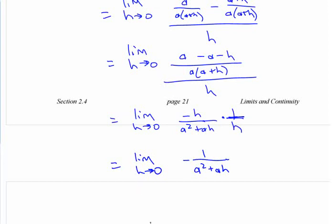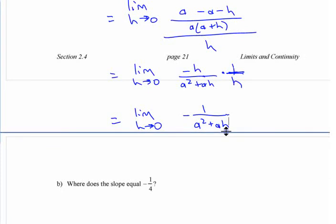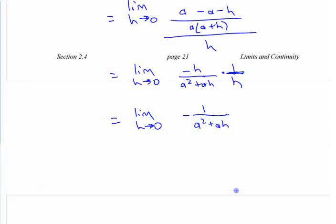At this point, can you put the 0 in and simplify it? You can, right? Minus 1 over A squared plus A times 0, right? Negative 1 over A squared. That's the slope of that curve at any point.